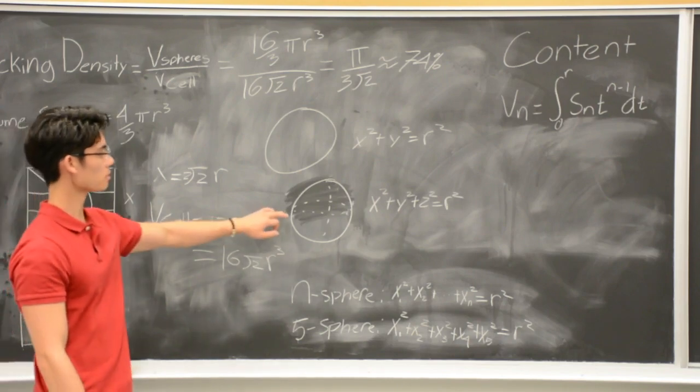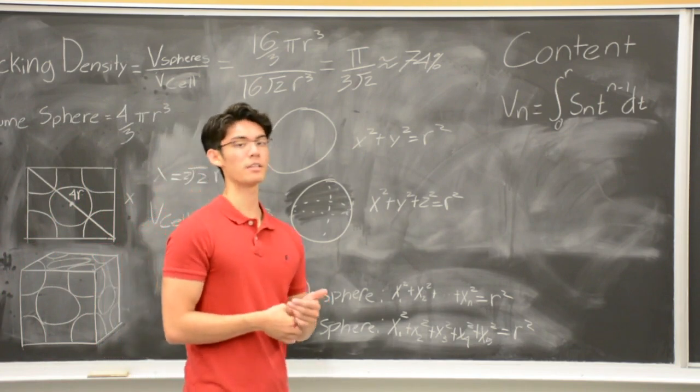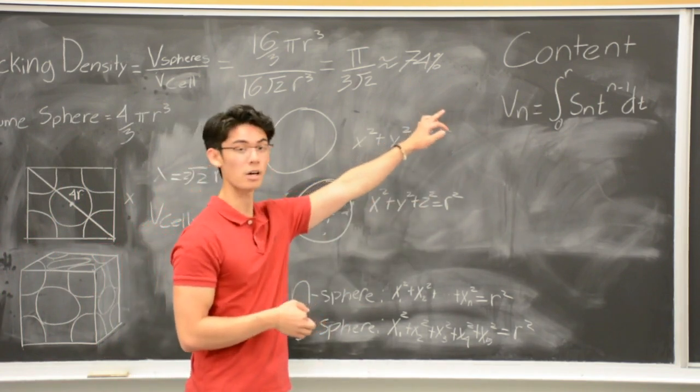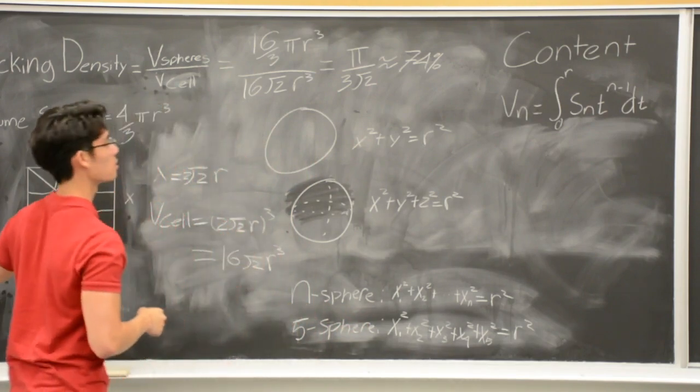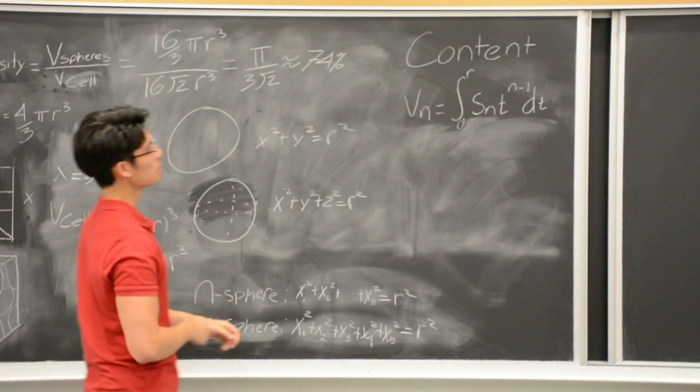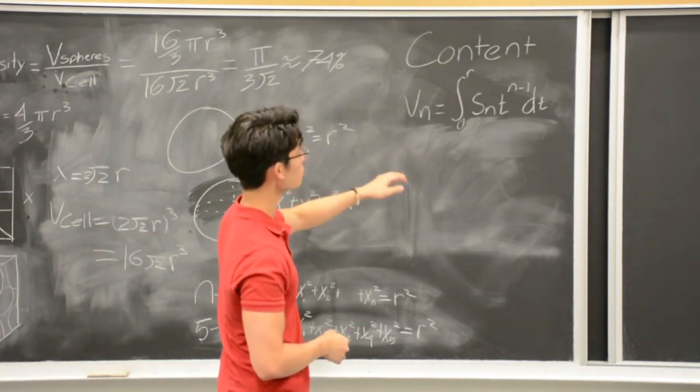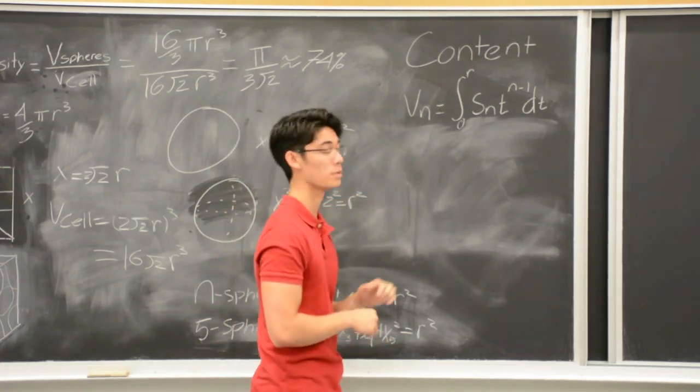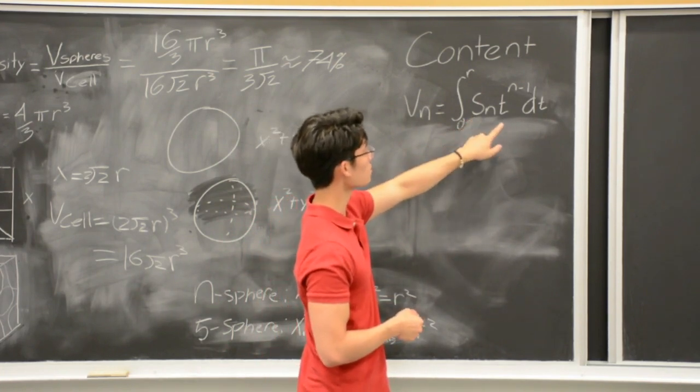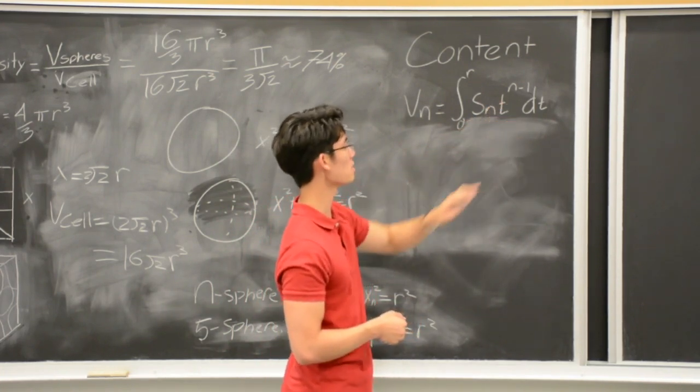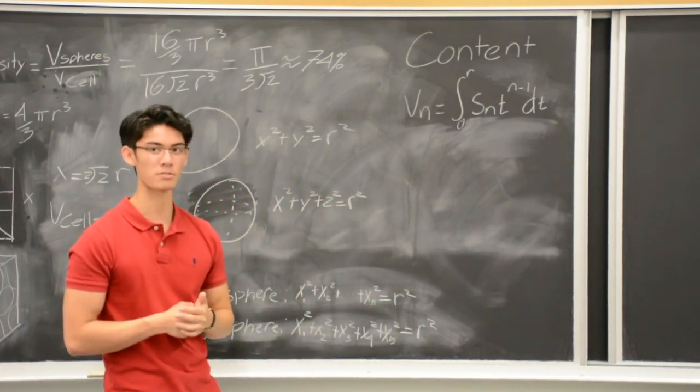Much like regular spheres, hyperspheres also have a volume, and that is known as the content of a hypersphere. And we can calculate that with this formula. The volume or the content of a hypersphere is given by the integral between zero and the radius of sₙ times t to the power of n-1 dt, where sₙ is the surface area of the hypersphere.